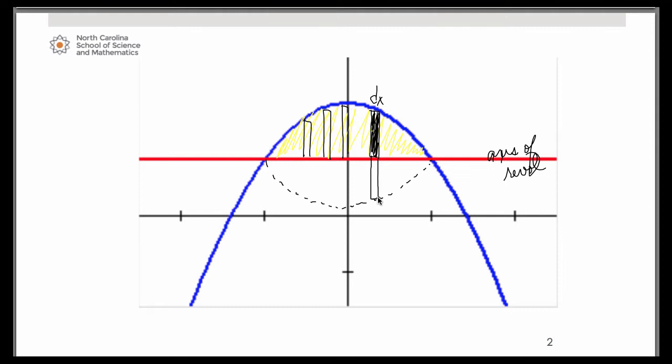The way in which we get a volume by using this disk method, one part that we need is the length of our representative rectangle that we'll call capital R.